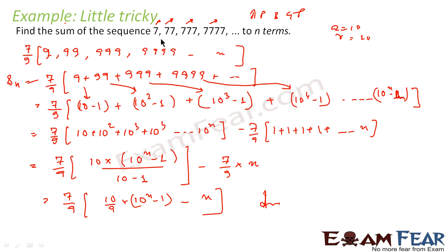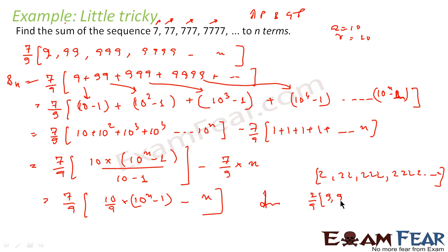Similarly, if you get questions like 2, 22, 222, 2222 up to n terms, you can write this as 2/9 × (9 + 99 + 999 + ... n terms). Then 9 = 10 minus 1, 99 = 10² minus 1, 999 = 10³ minus 1, and so on. That's how we solve these questions. Please make note of this pattern.